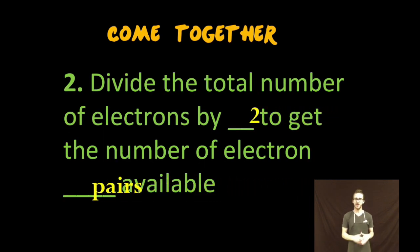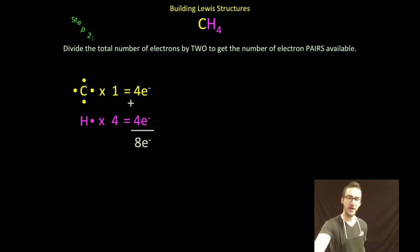Step two, divide the total number of electrons by two to get the number of electron pairs available. And we're really going to focus on pairs because that's the number of electrons that can fit in any given orbital. So as I come back to my example of CH4, if I take my eight total valence electrons and divide by two, I get four electron pairs.